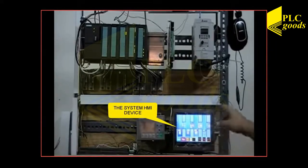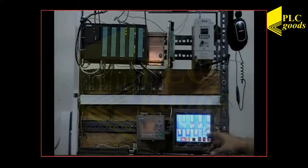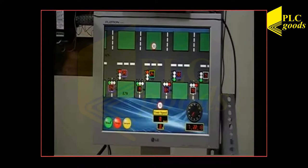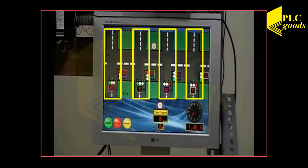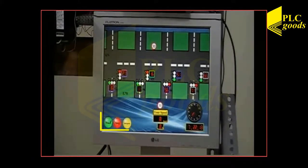Also, a similar screen like the HMI has been designed on the computer using WinCC software. Similarly, you can see the main street and its four intersections, traffic lights and related timers, start, stop, and emergency buttons, the car speed, and also the current time and date.